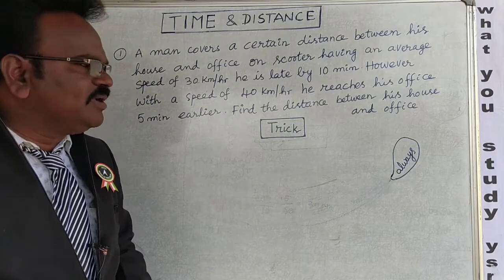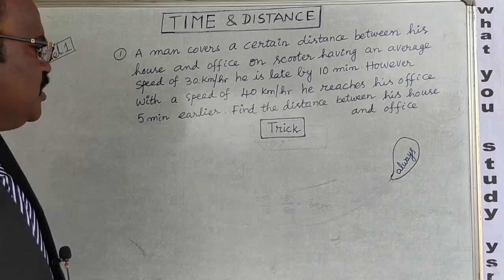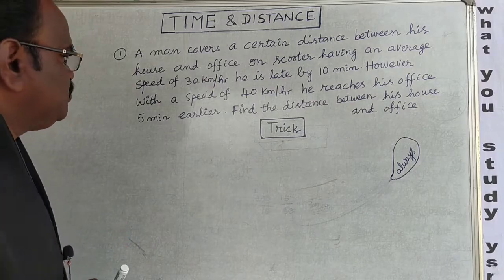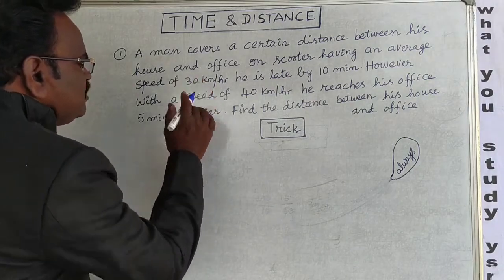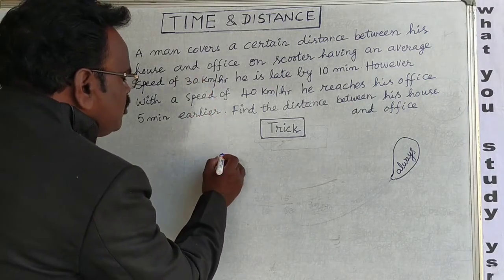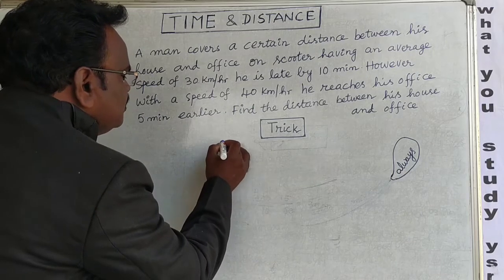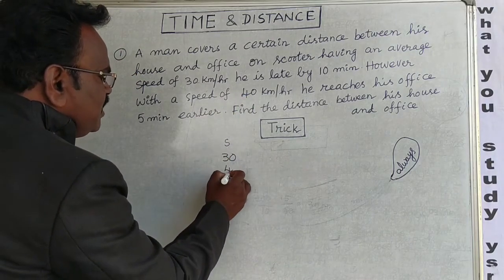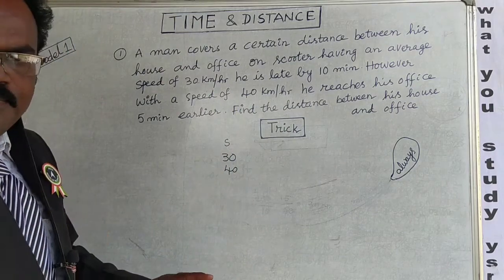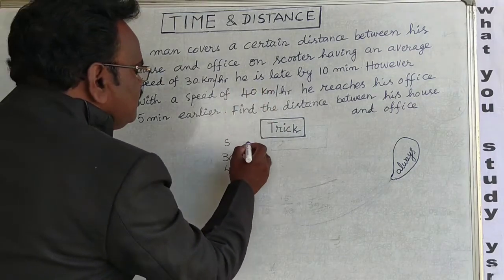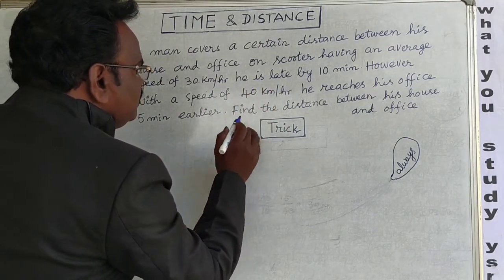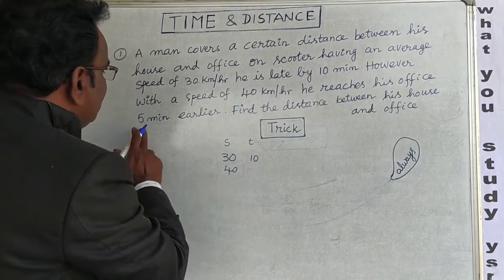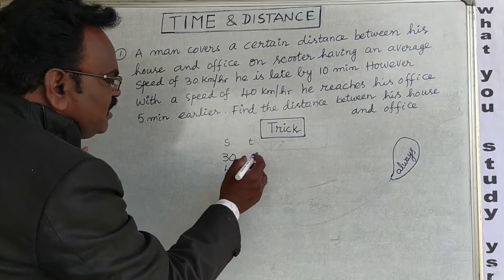Tricky method — this is the best method. First, write the speeds: 30 km/h and 40 km/h. Then write the times: 10 minutes and 5 minutes.